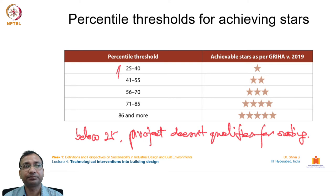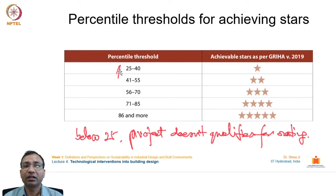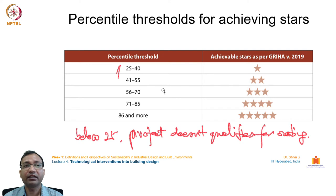The star rating thresholds are as follows: projects scoring 25–40 points receive a 1-star rating; projects falling short of 25% may not receive any star rating. The range 41–55 earns 2 stars, 56–70 earns 3 stars, 71–85 earns 4 stars, and 86 points and above earns the highest GRIHA 5-star rating.